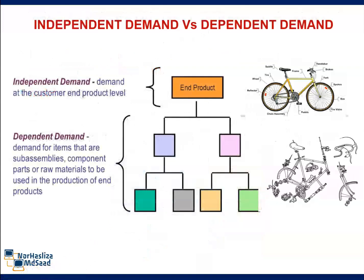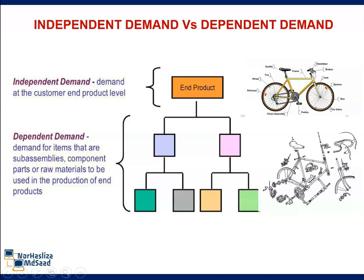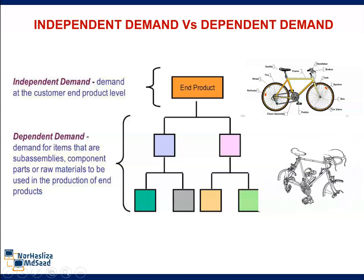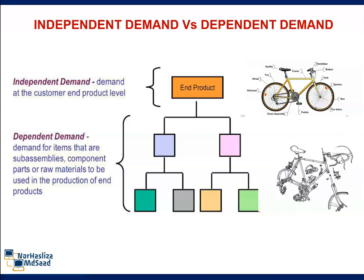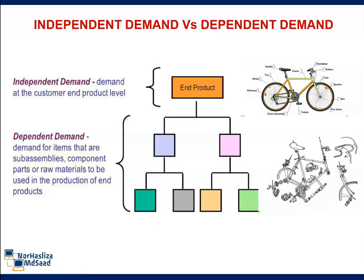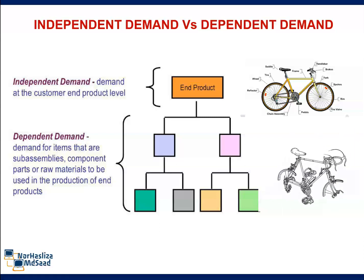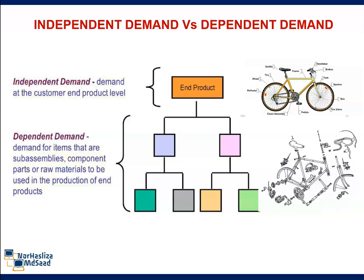What is the difference between Independent Demand and Dependent Demand? Independent Demand is the demand at the customer and product level. Dependent Demand is the demand for items that are subassemblies, component parts, or raw materials to be used in the production of end products.